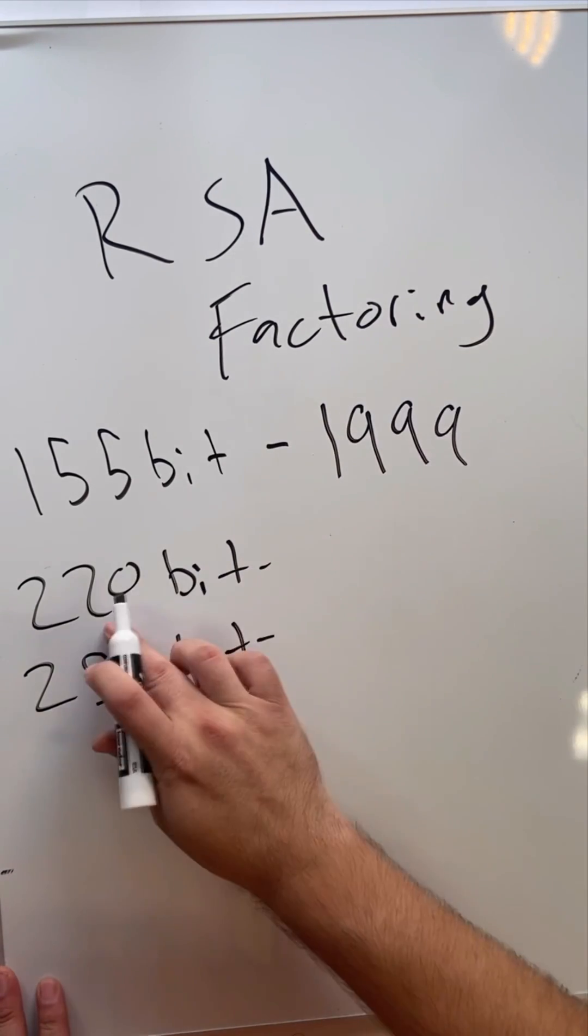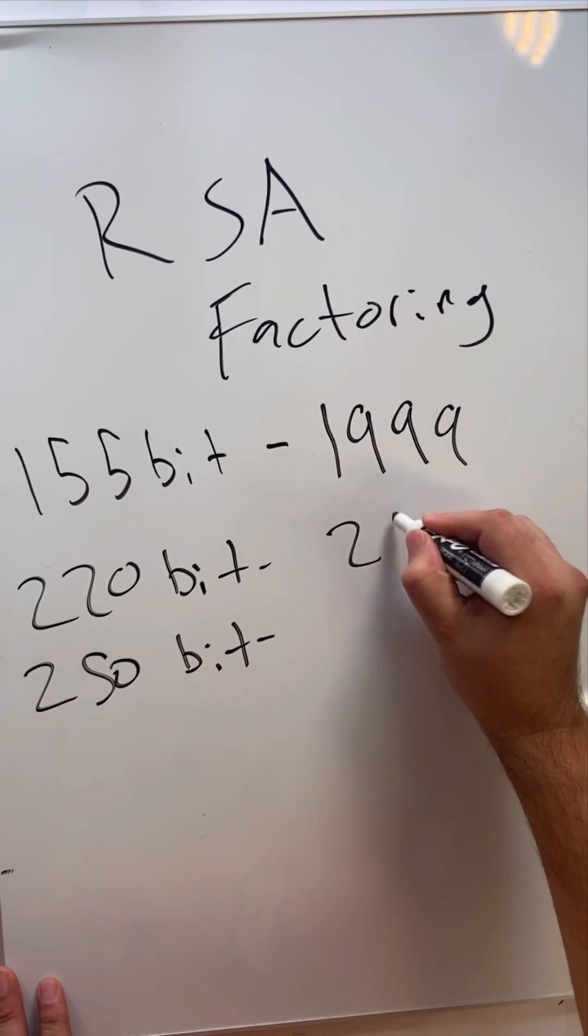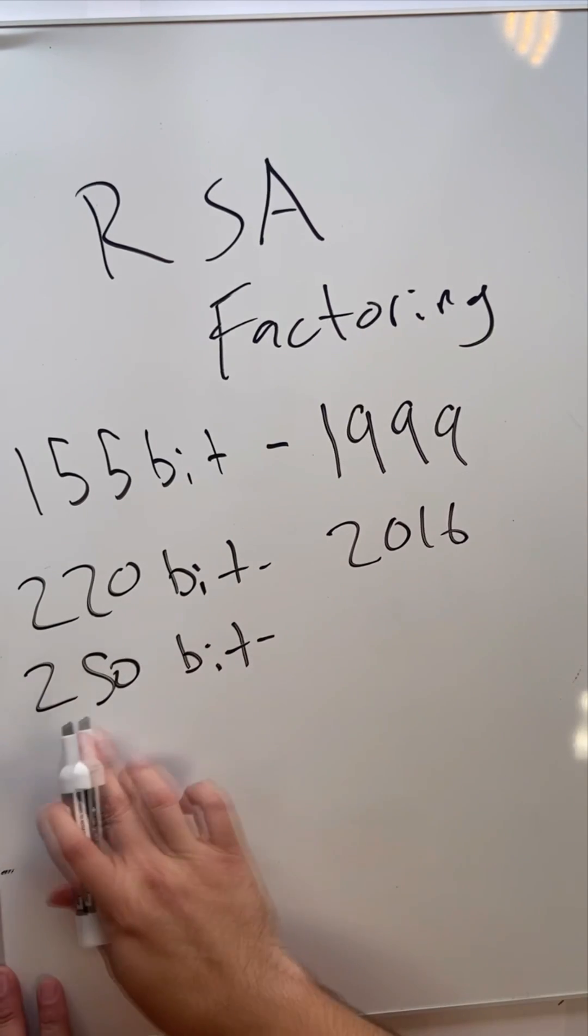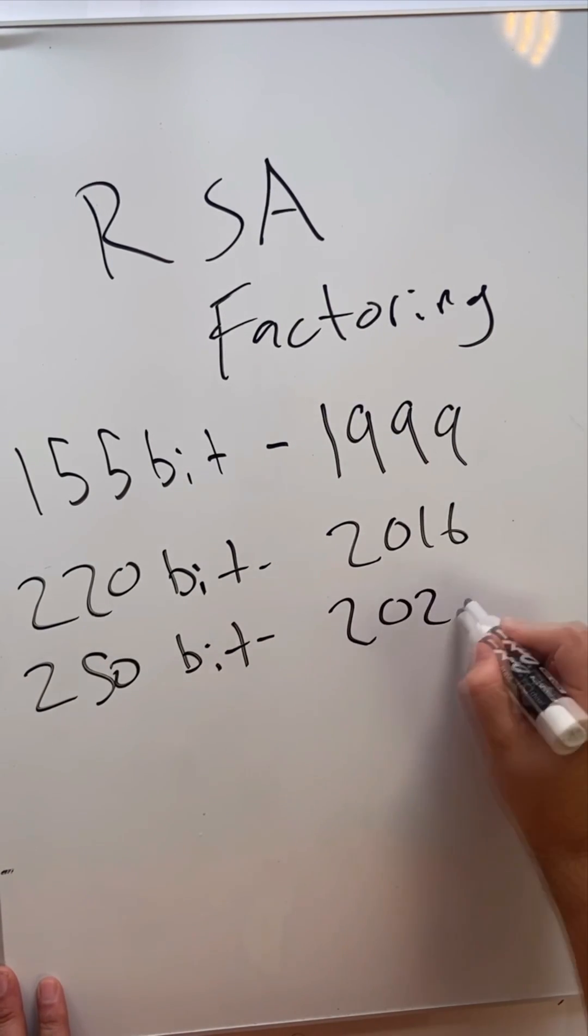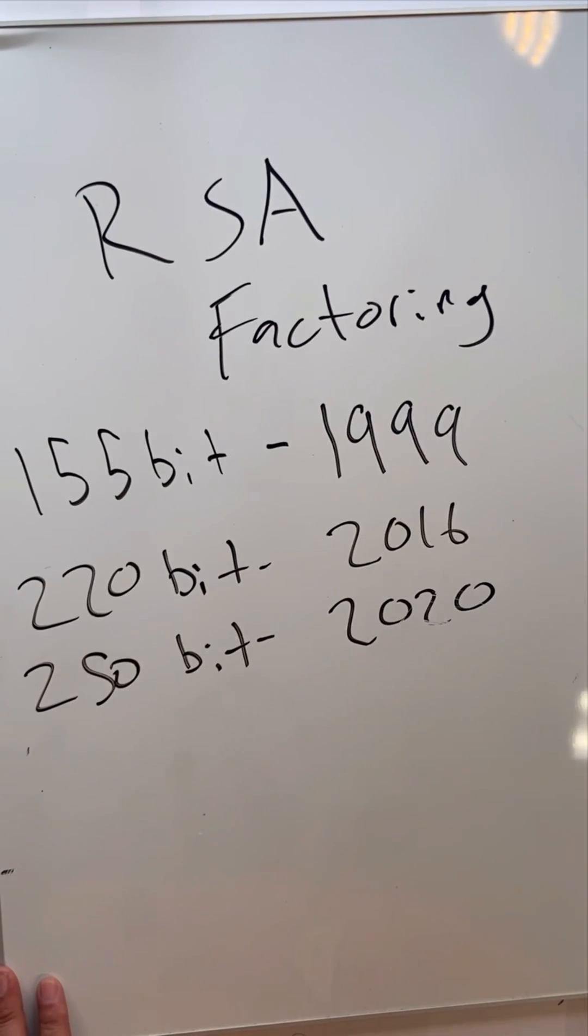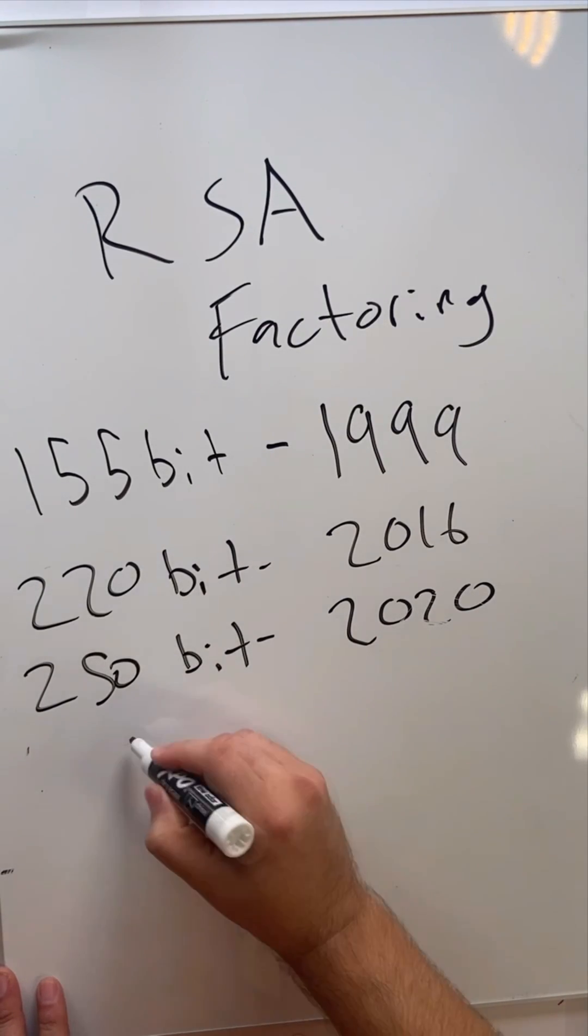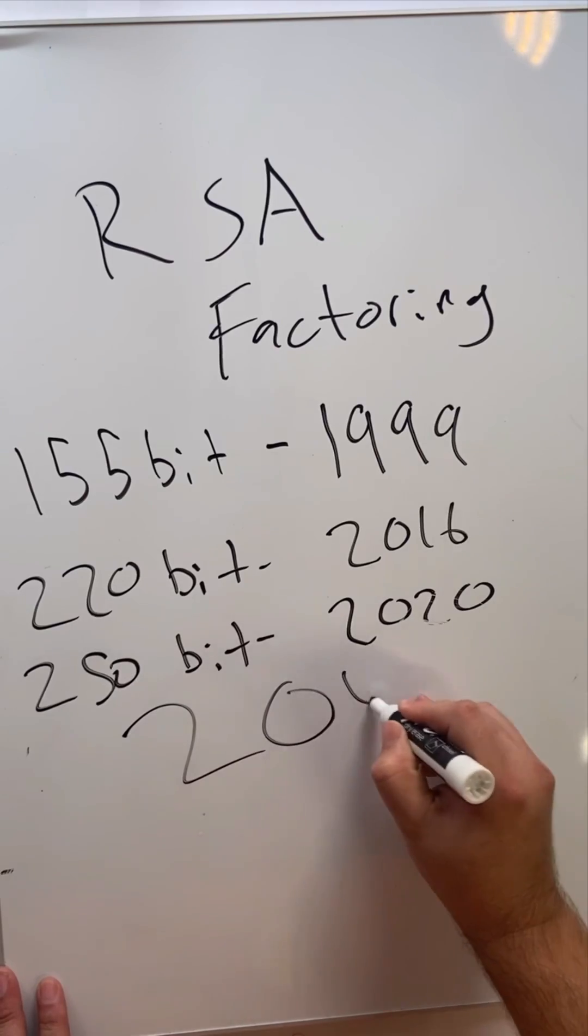Well 1999 was the first time someone was able to factor a 155 bit RSA number and it wasn't until 2016 that someone was able to factor a 220 bit number and barely last year someone factored a 250 bit number. Remember the one I showed you earlier was 1024 bit and that's because the standard is at least 2048 bit.